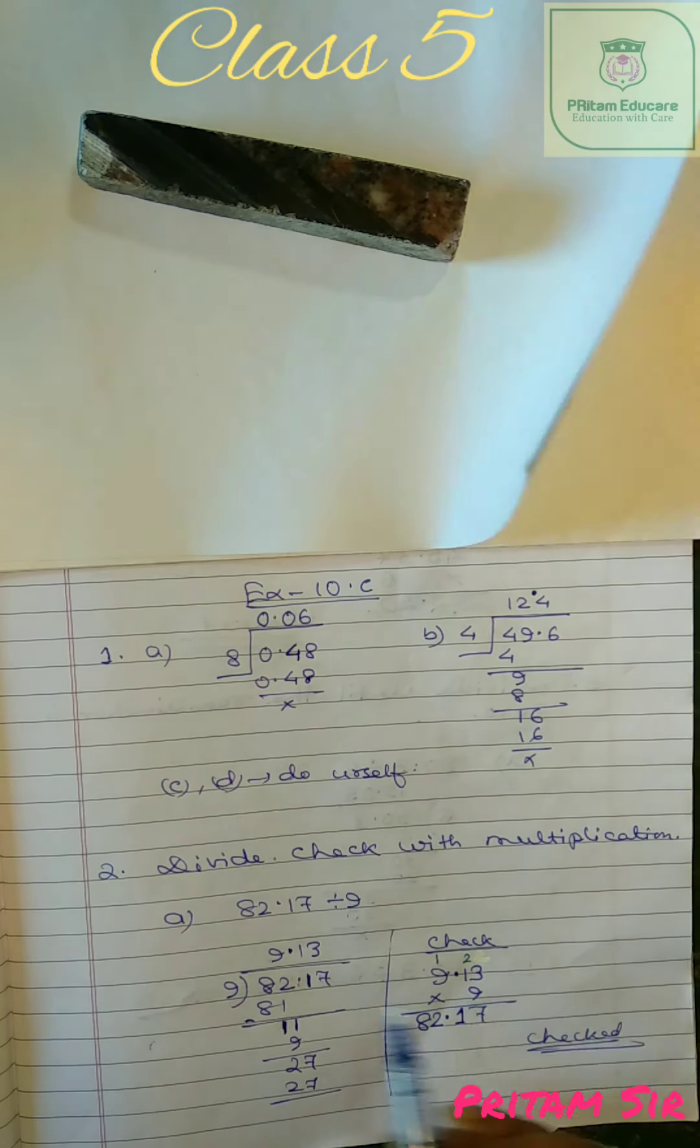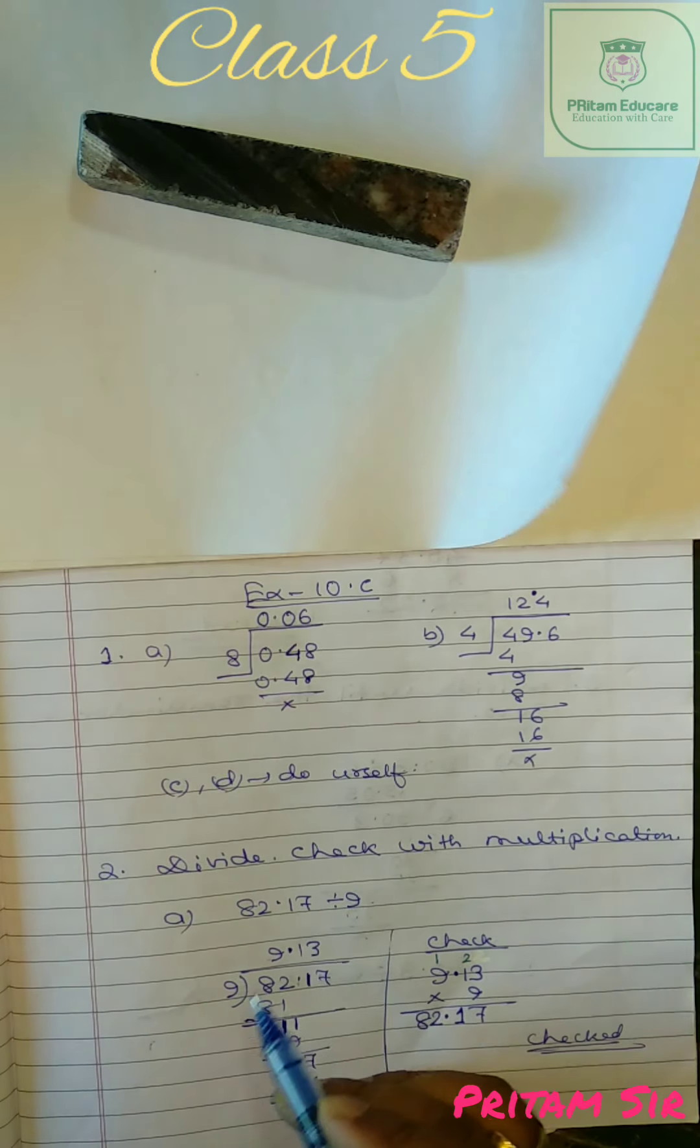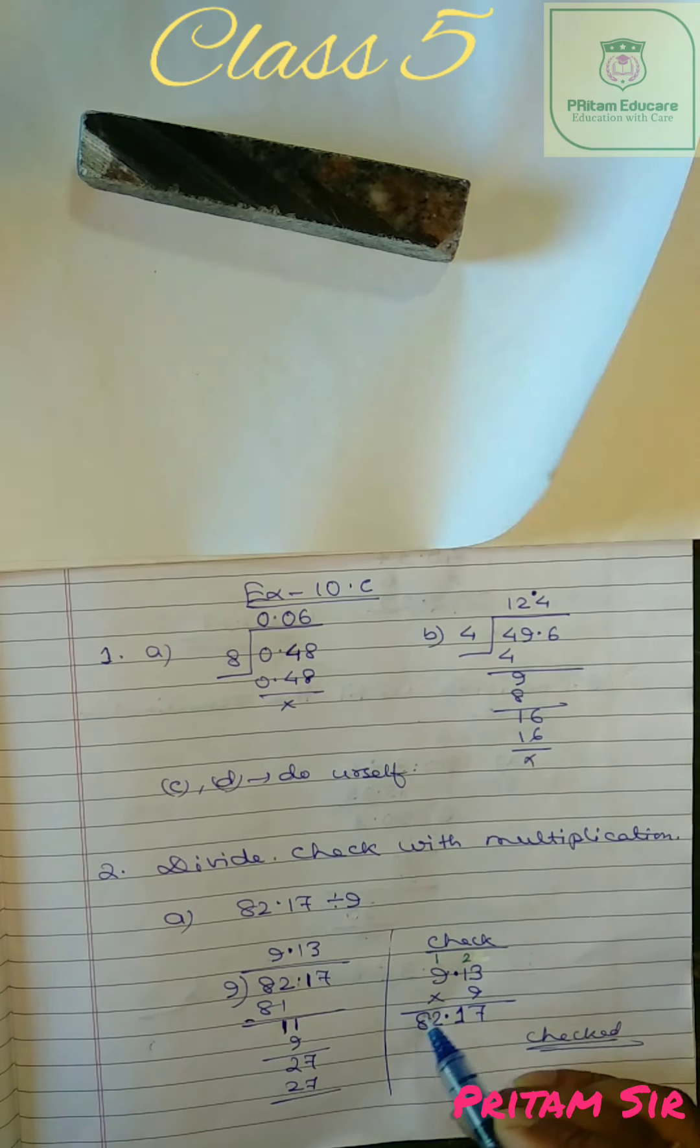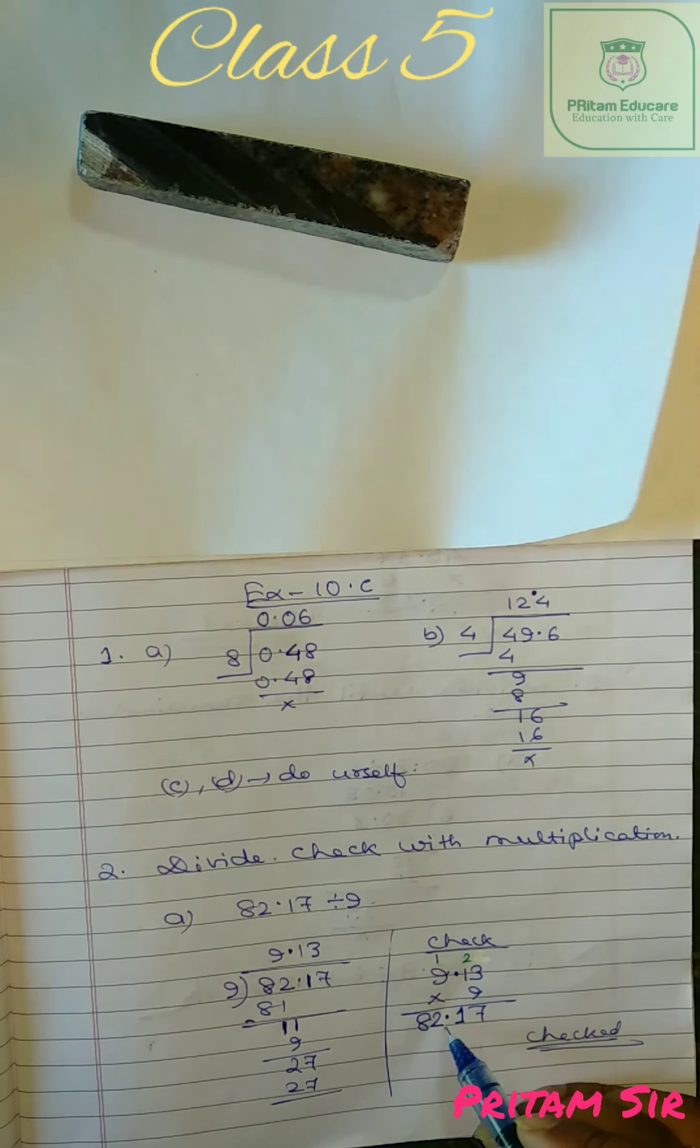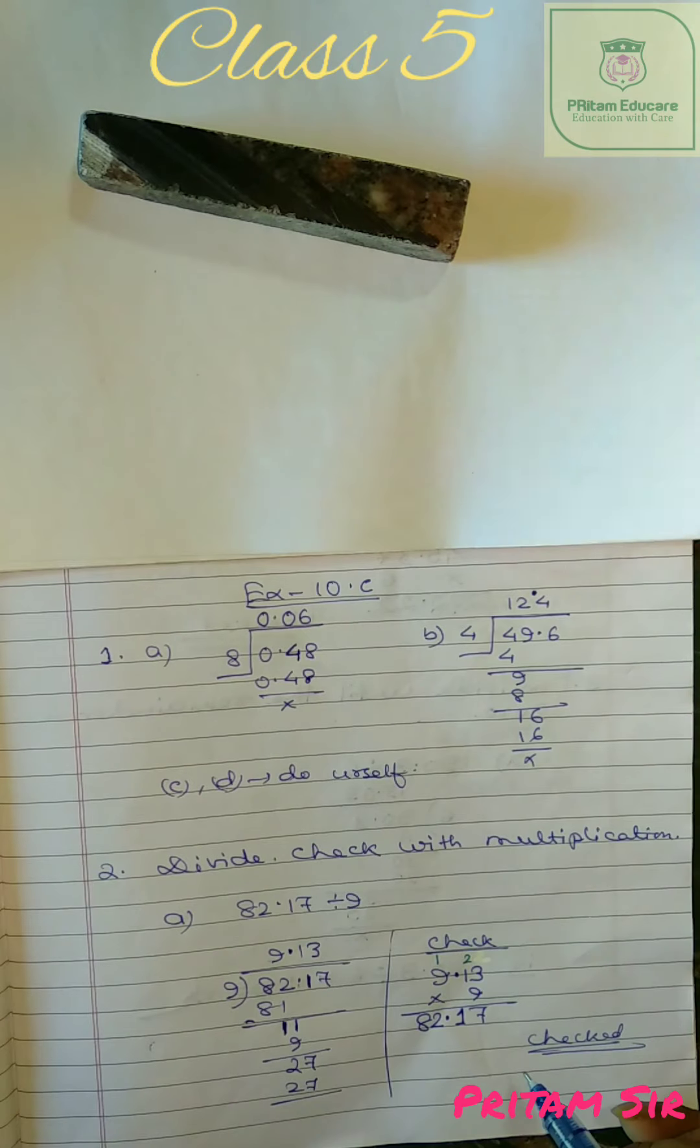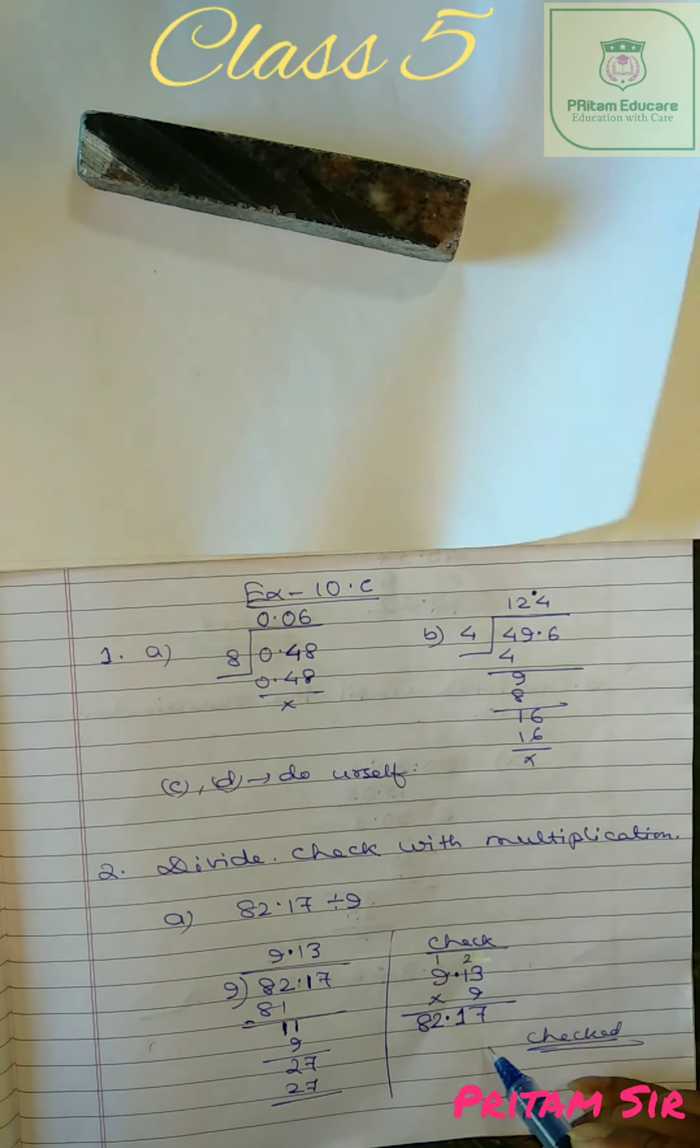So 9.13 into 9, this divisor and this quotient if we multiply we will get the dividend 82.17. So 3 into 9 is 27, 7, 2 carry and 9 plus 2 is 11, 1, 1, 1 carry, 9 into 9 is 81 plus 1 is 82. So it is checked.